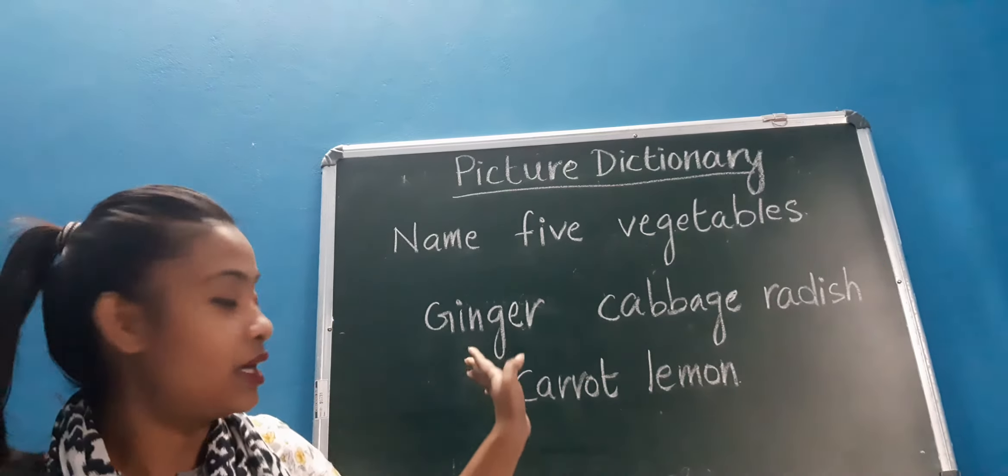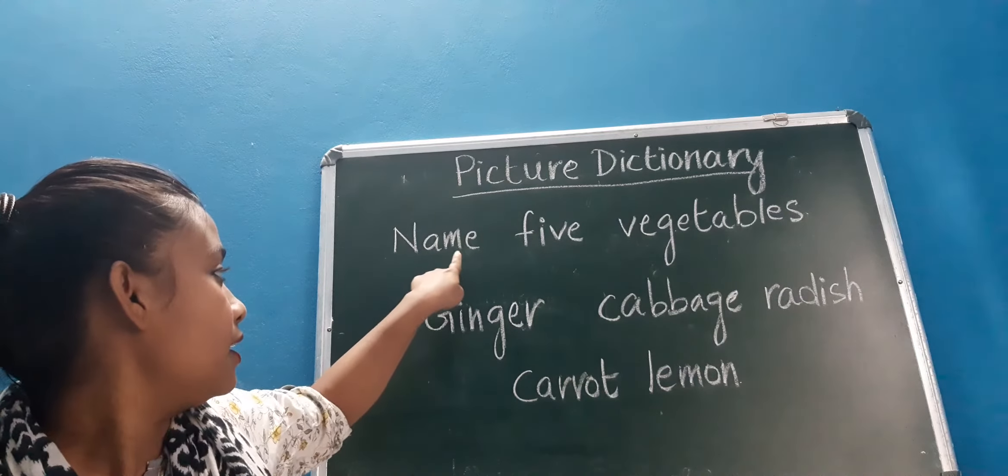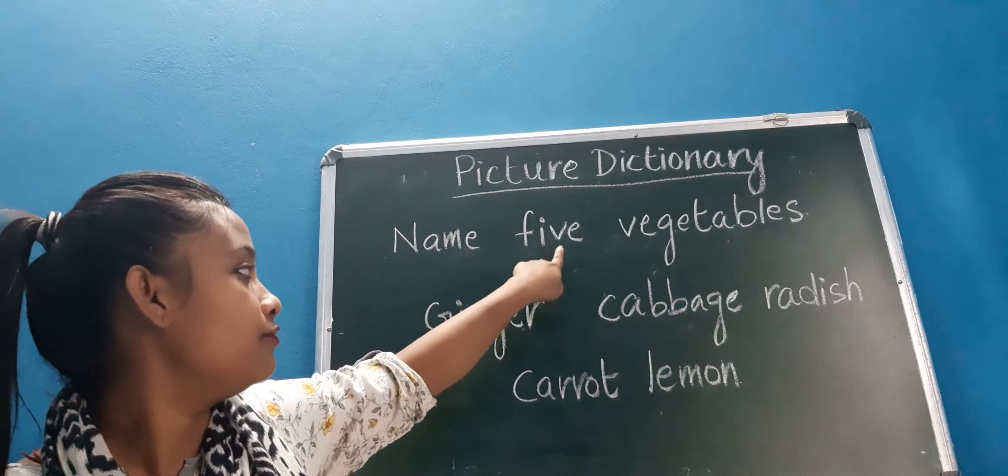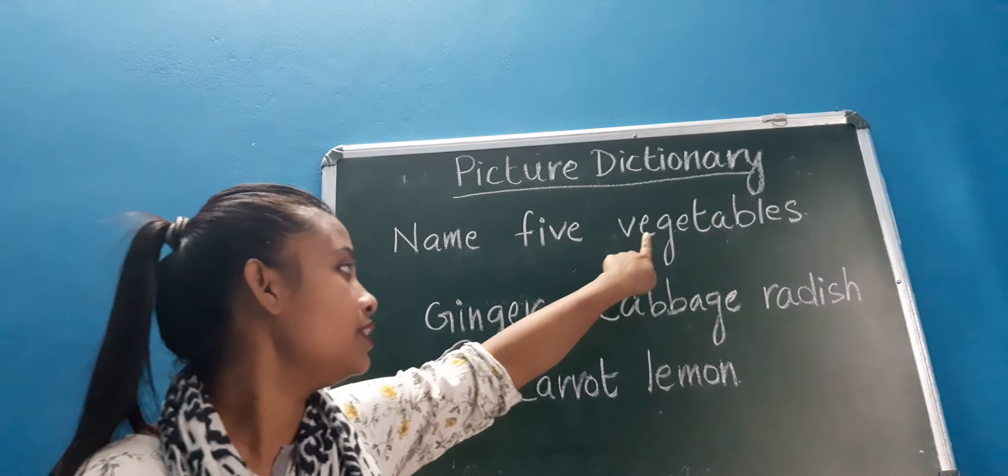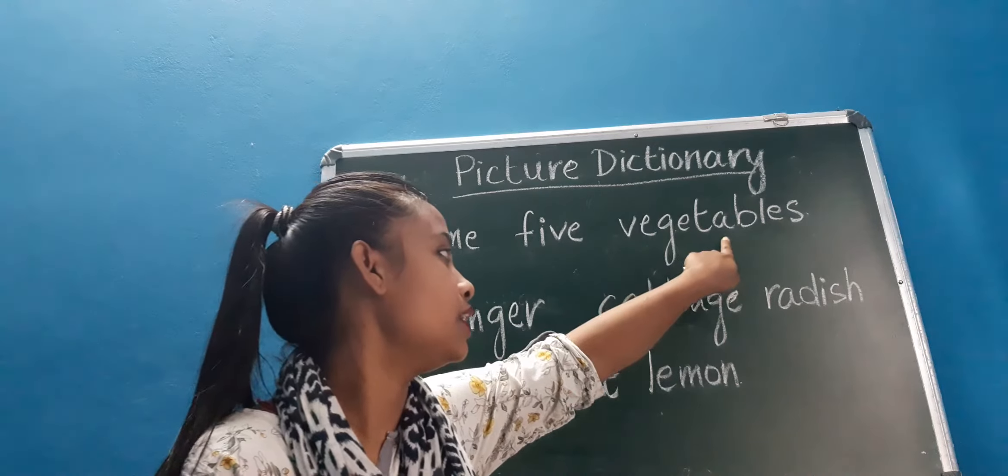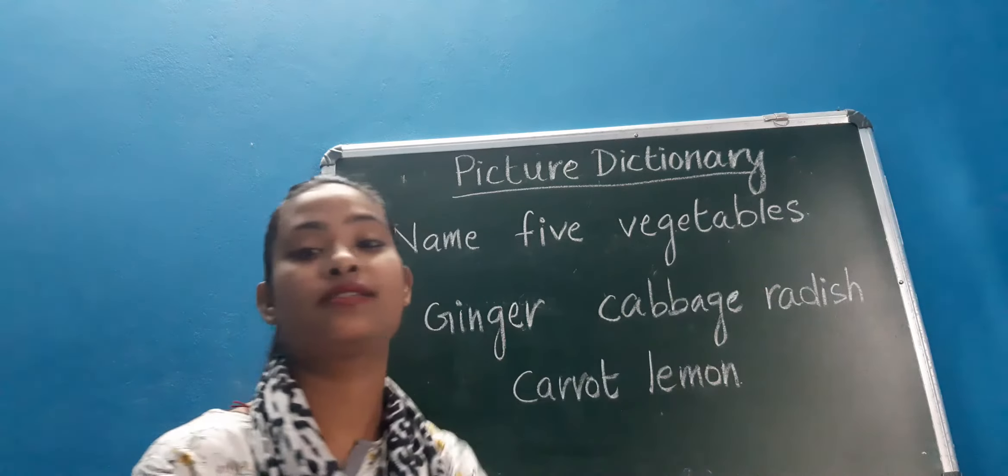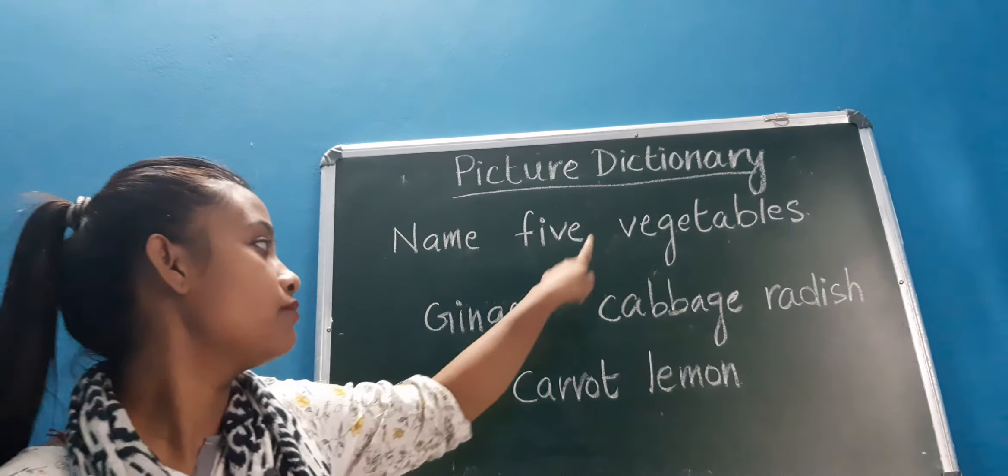Now let's begin. N A M E, name. F I V E, five. V E G E T A B L E S, vegetables. Name five vegetables.